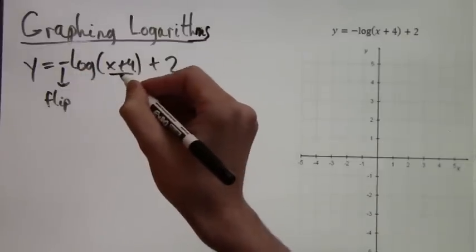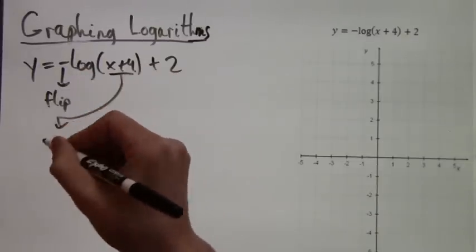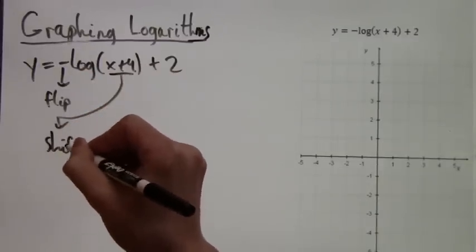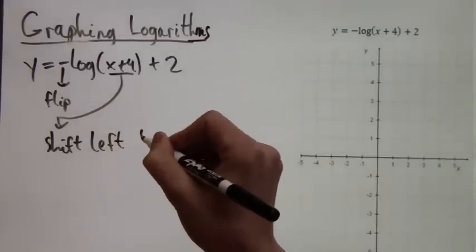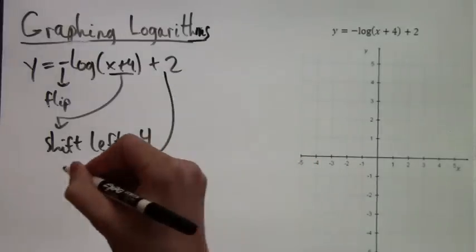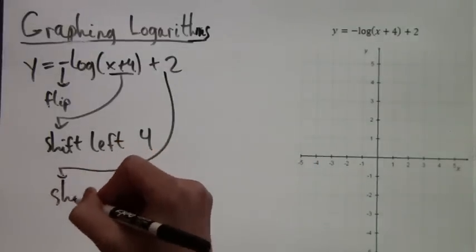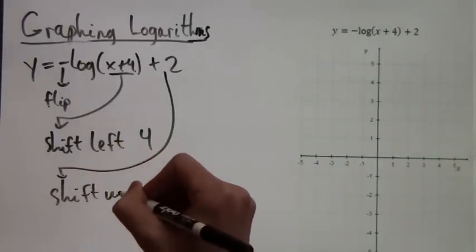Then also there will be the shifts. X plus 4 means a shift of four to the left, and the plus 2 outside of the parentheses means a shift of two upwards.